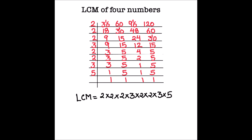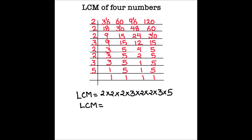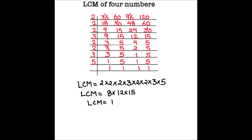Computing the product: 2 × 2 = 4, 4 × 2 = 8, 8 × 2 = 16, 16 × 2 = 32. Then 32 × 3 = 96, and 96 × 15 = 1440. So the LCM of 36, 60, 96, and 120 is 1440.